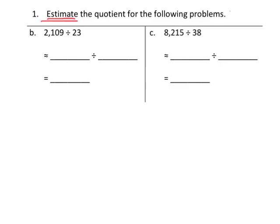So in this first problem, 2,109 divided by 23, I think what I would probably do is I would take that 23 and I'd say, let's round that down to 20. And then the 2,109, I'd probably round that down to 2,000.